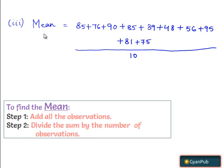Since we know mean is equal to sum of all the observations by number of observations. Here sum of observations are as follows and the number of observations are 10.